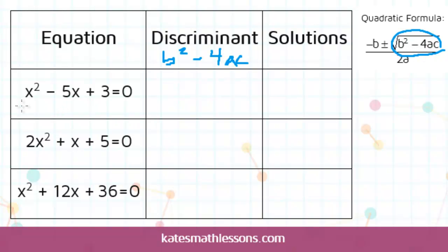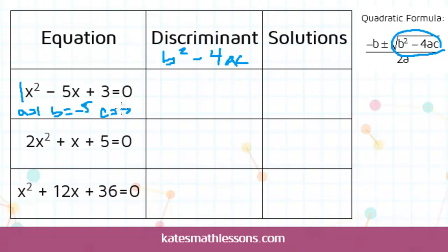You follow the same sort of steps as you do for the formula. You identify a, b, and c. So your a in this case would be 1, b would be negative 5 since it's a minus 5 here, and c would be 3. Then you just plug them into the formula.